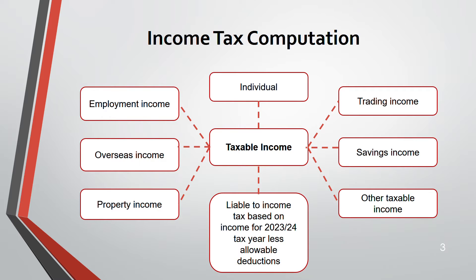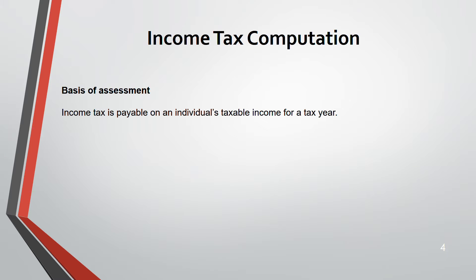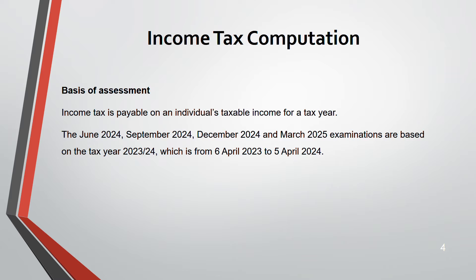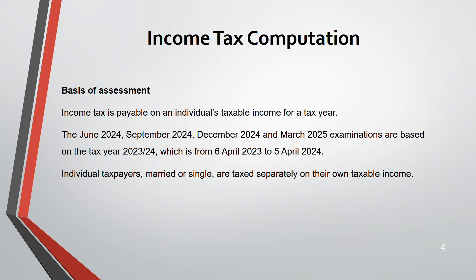Your income tax is payable on your taxable income for a tax year. For the June 2024, September 2024, December 2024, and March 2025 examinations, the tax year is 2023-24, running from 6 April 2023 to 5 April 2024. You must remember this. Even if you are married, you are taxed separately on your own individual incomes, not as a couple.